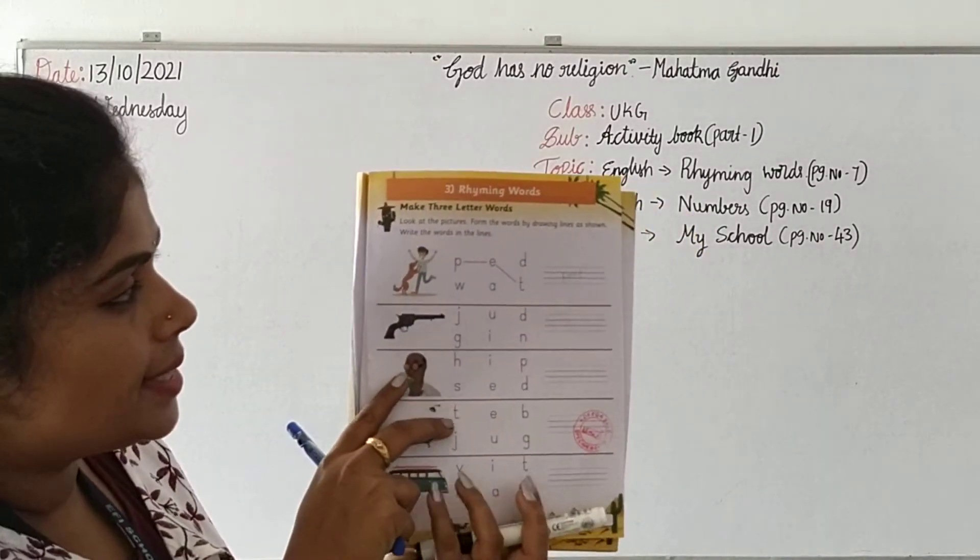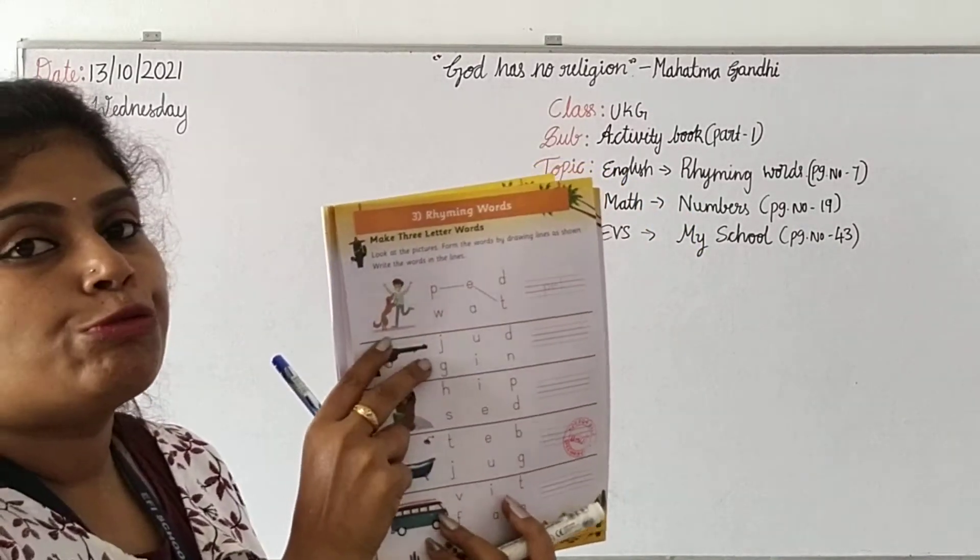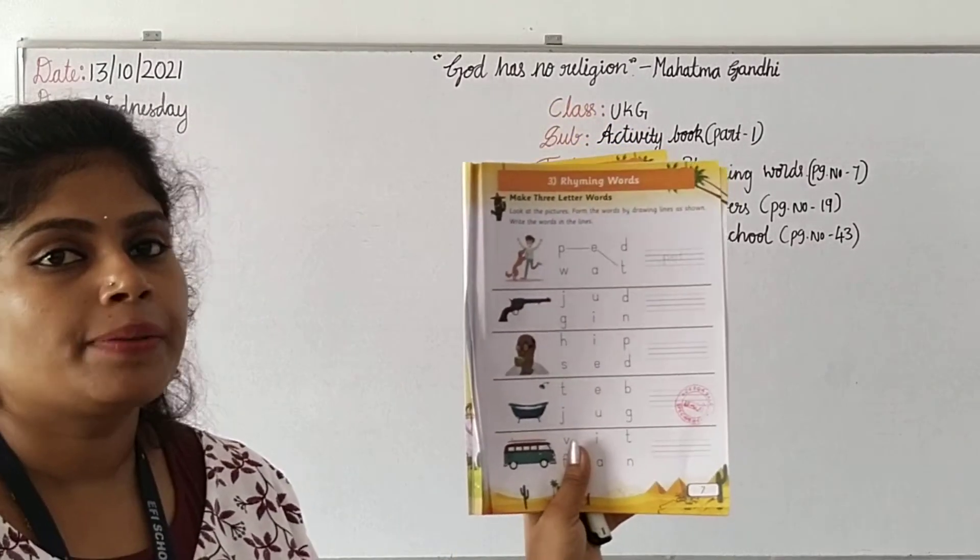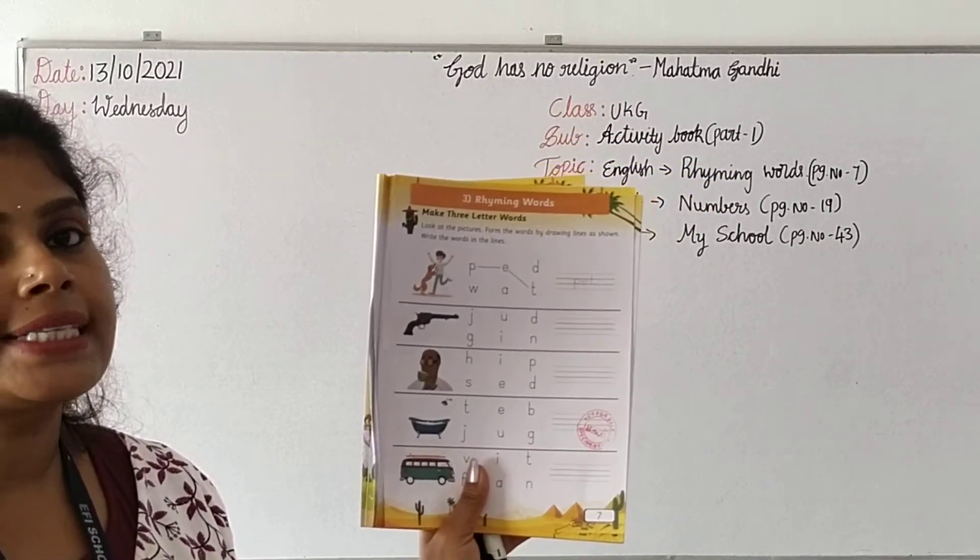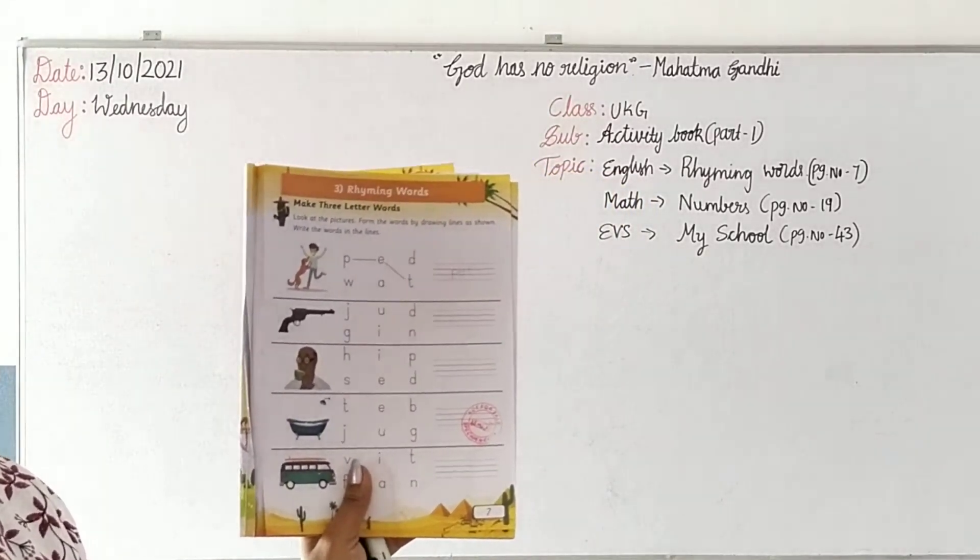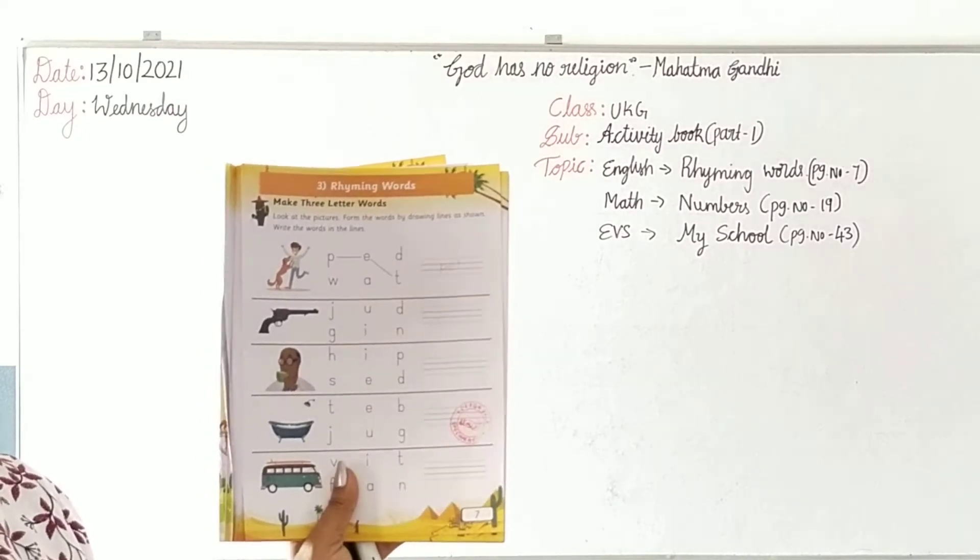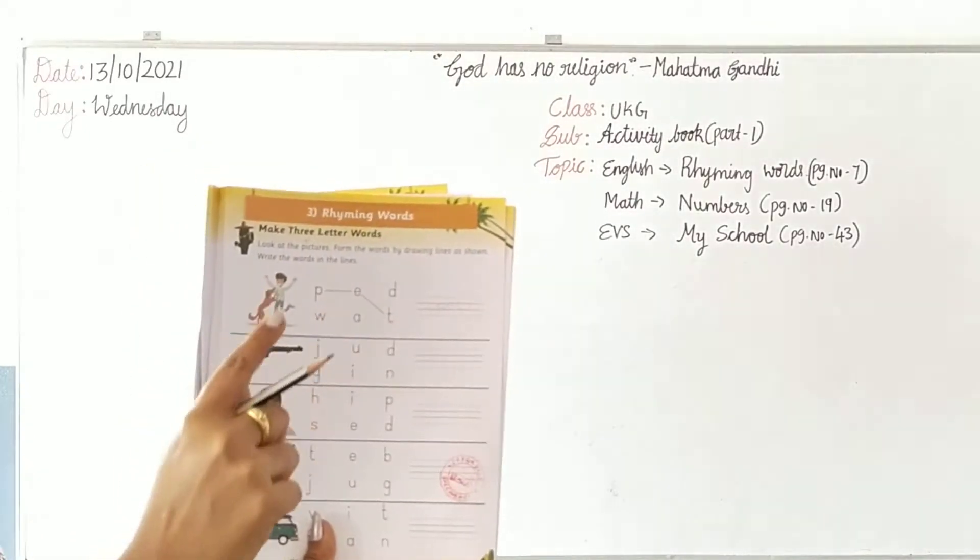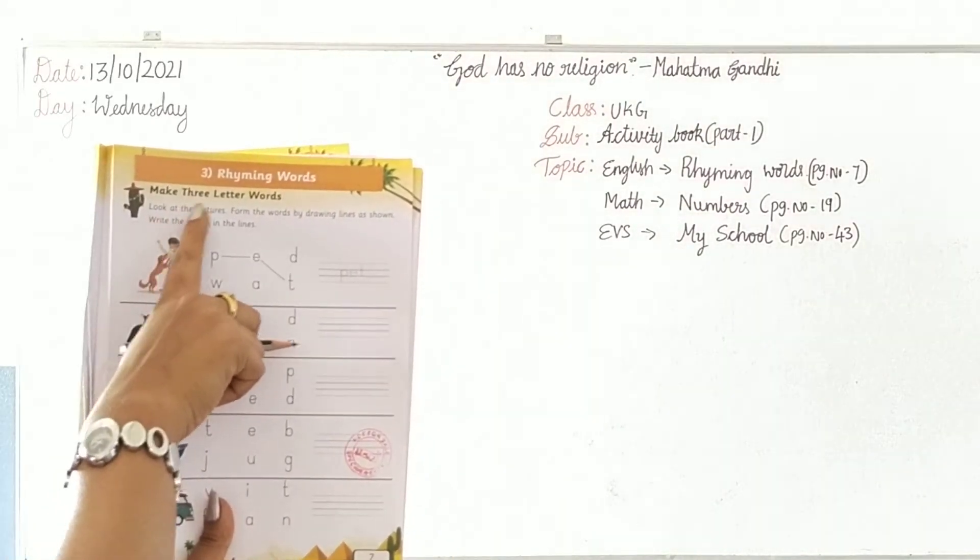Rhyming words. What we have learnt? What is rhyming words? Rhyming words is nothing but the words ending with the same sound. It is called rhyming words. Make 3-letter words.